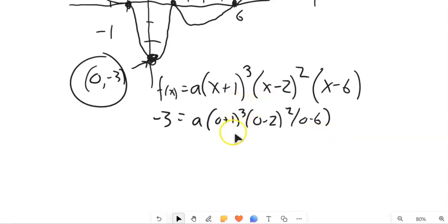So let's see. This is 1 times 4 times 6, which is 24. So 24. Oh, negative 6. So it's negative 24.